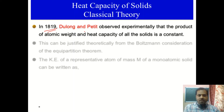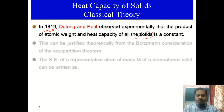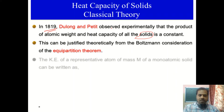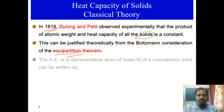In the year 1819, Dulong and Petit observed experimentally that the product of the atomic weight and the heat capacity of all solids is a constant. This was an experimental observation and later it was justified theoretically by considering Boltzmann's equipartition theorem, which tells that the kinetic energy per degree of freedom is equal to half kT for any system.